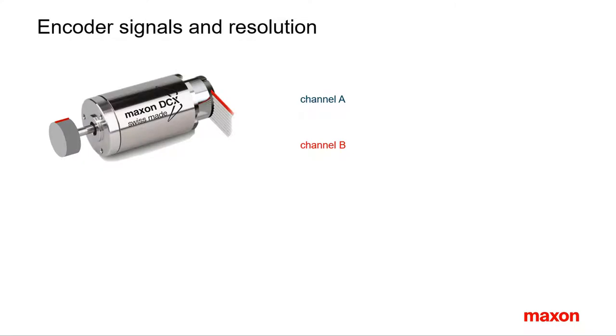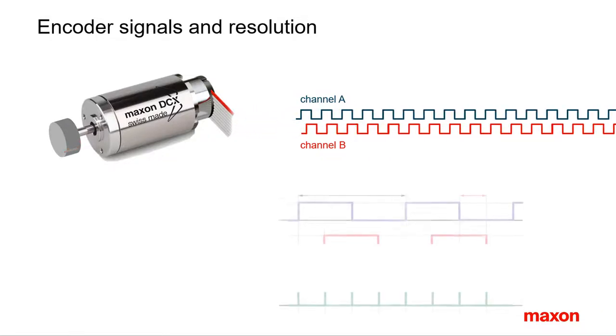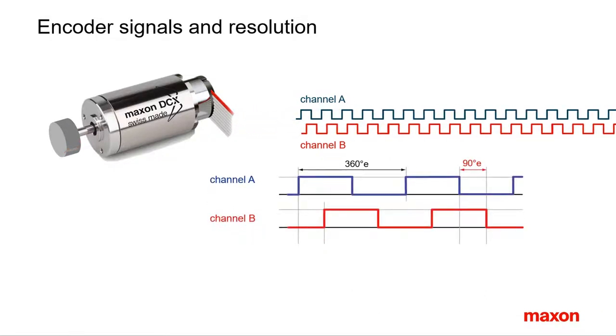There are several types and technologies of incremental encoders, but at the end they all give the same type of rectangular output signals. The characteristic parameter of incremental encoders is the number of counts per turn on each of the two channels A and B.